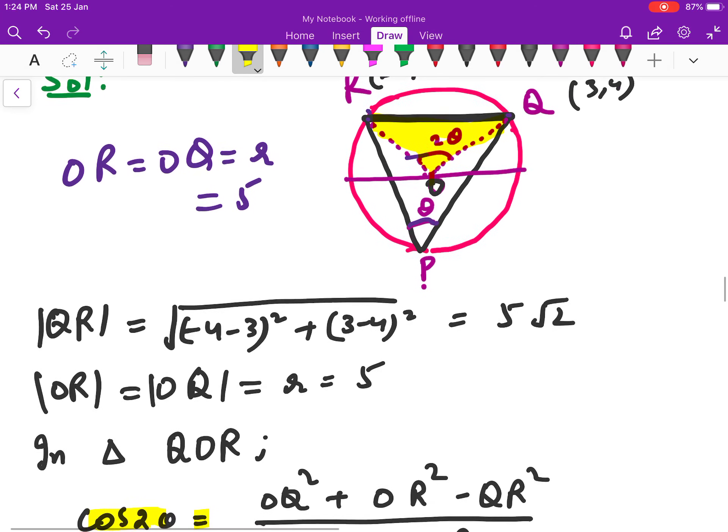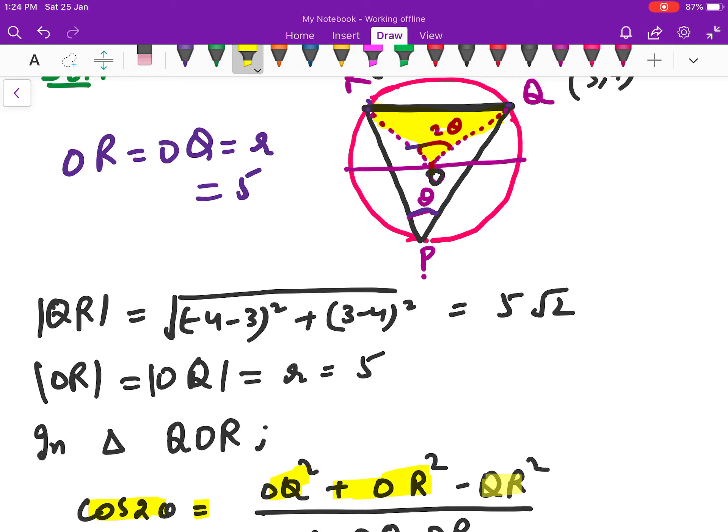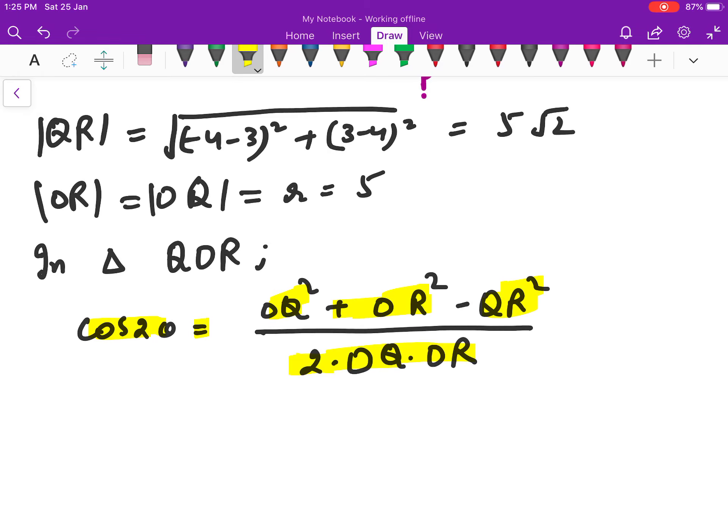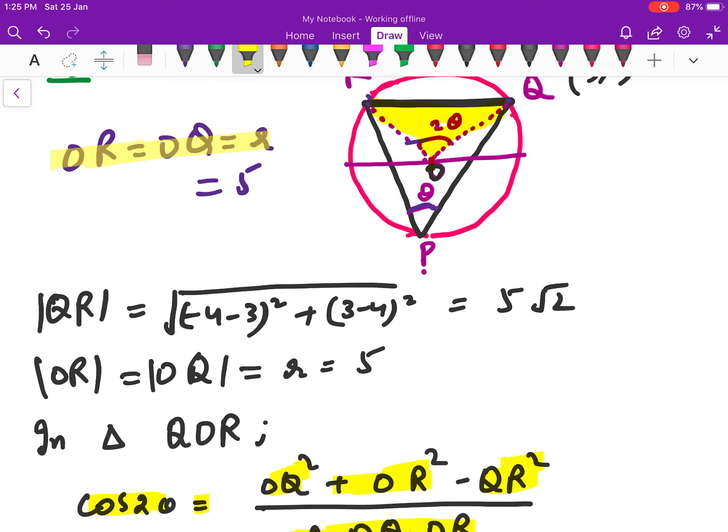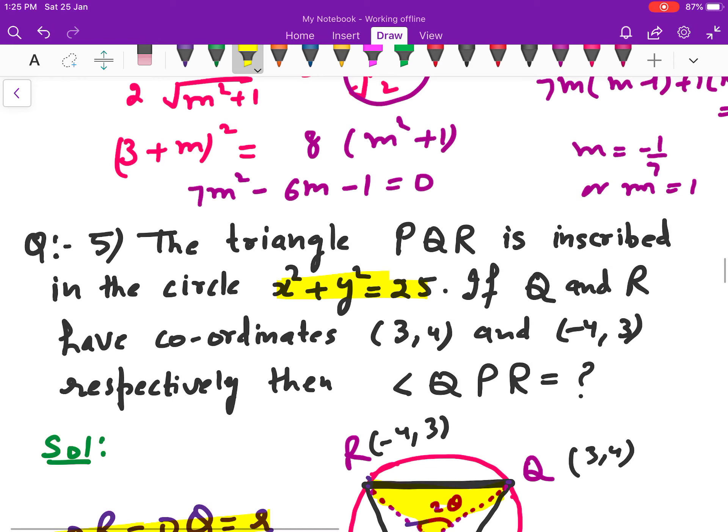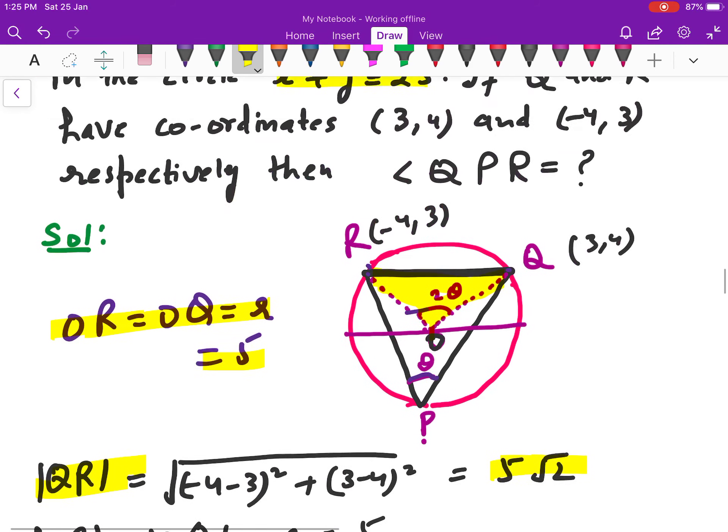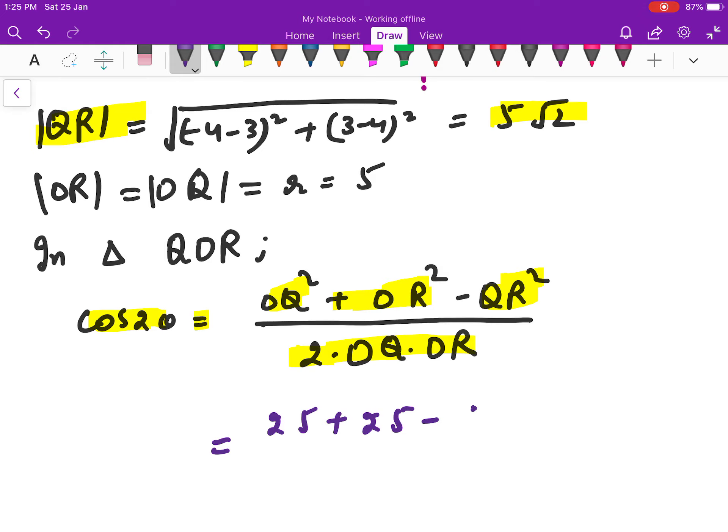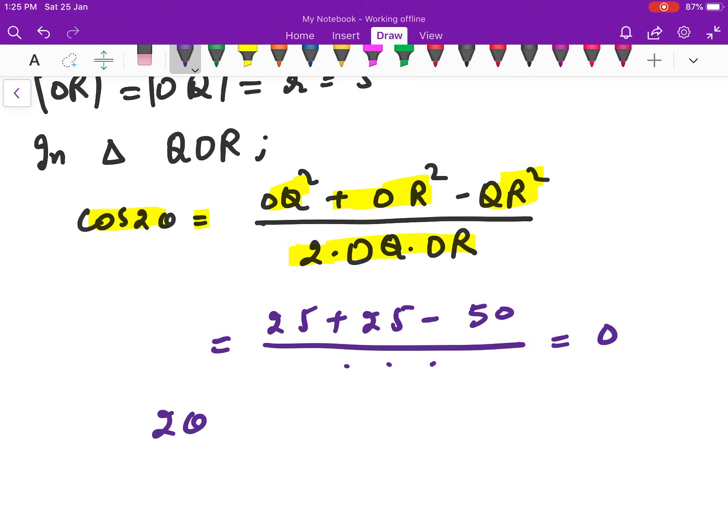This is the basic concept that QPR theta and the center angle. I have to find out QR this way. So this will be 25 + 25 minus QR square, which gives cos theta 0, 90 times cos φ/2 by 4, so this will be theta by 4.